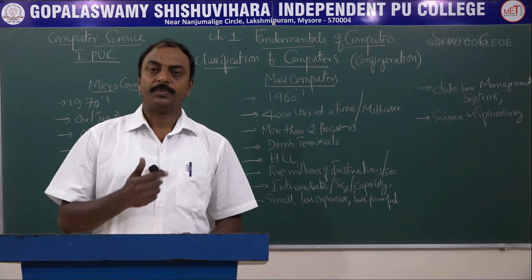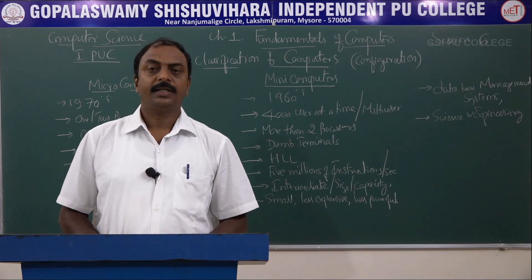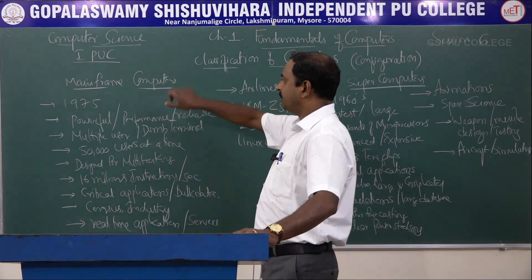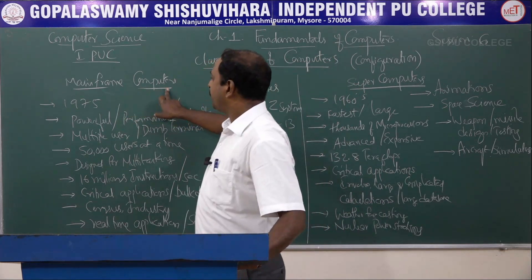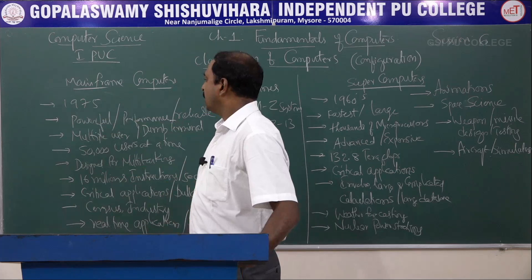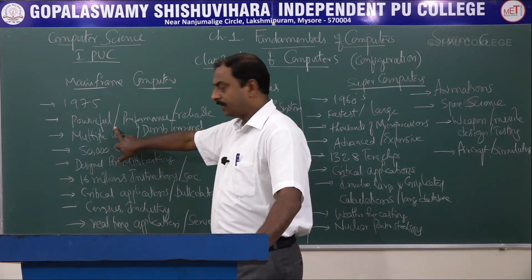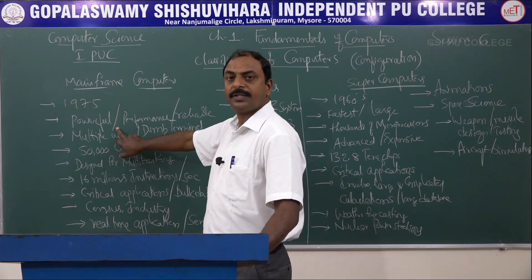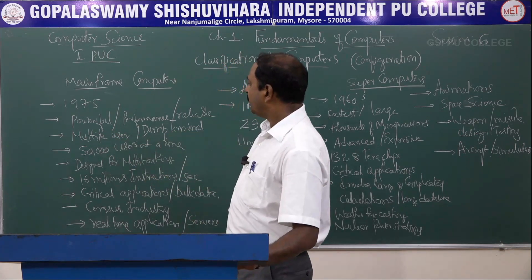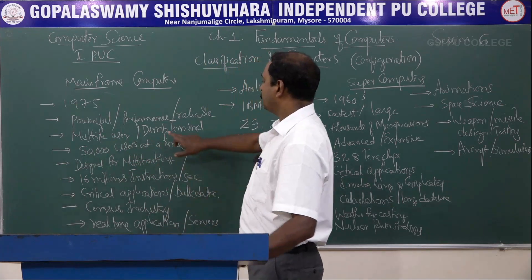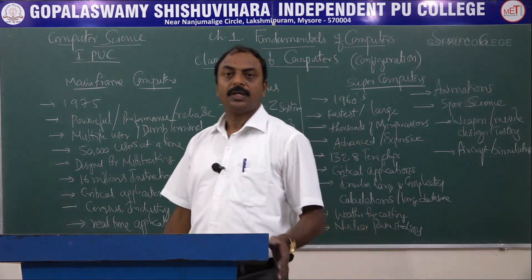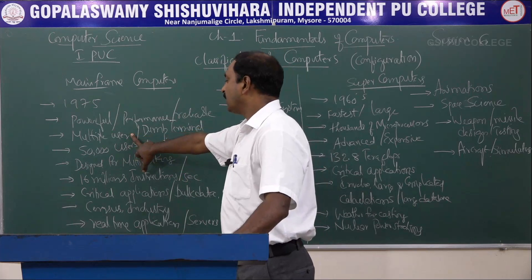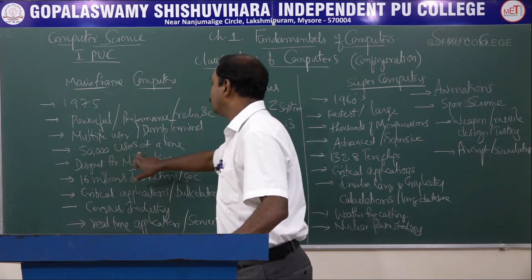Now let us look at mainframe computers. The mainframe computer period is around 1975 onwards. These are more powerful and more reliable in performance compared to minicomputers and microcomputers. They are multi-user systems, supporting around 50,000 users at a time.